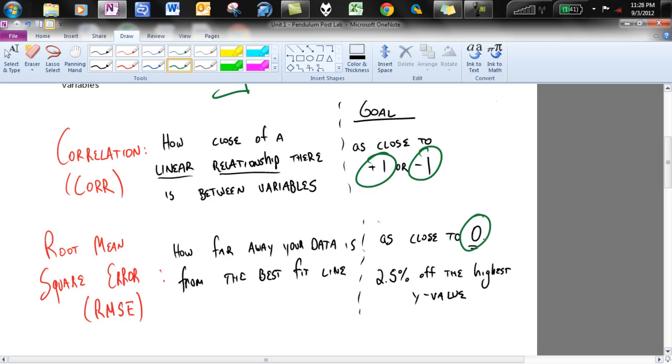So the way that I like to think about this is correlation is going to be how close are you walking the line? Root mean square error is how far away from the line are you? So you can kind of see a good piece to that.